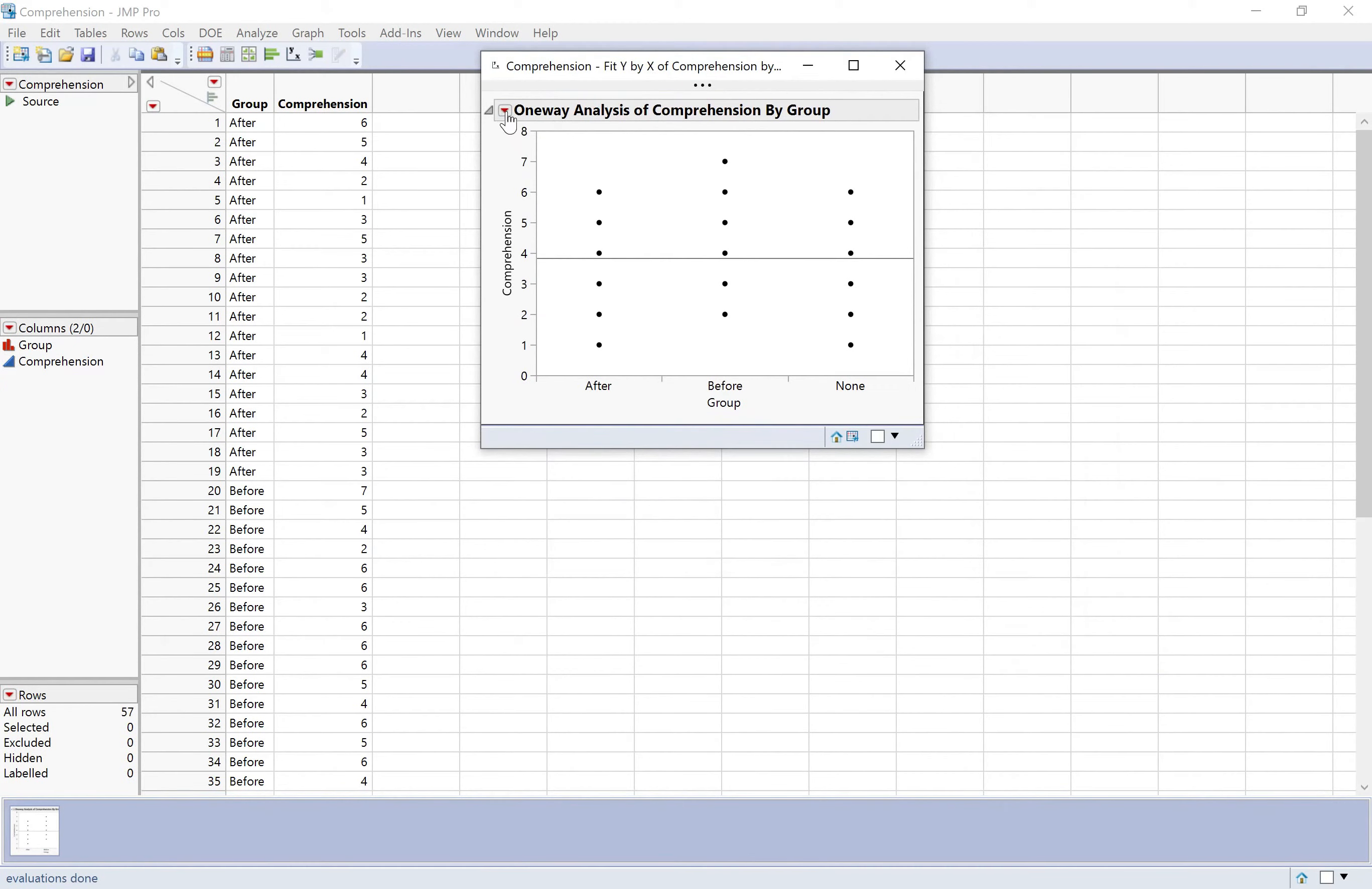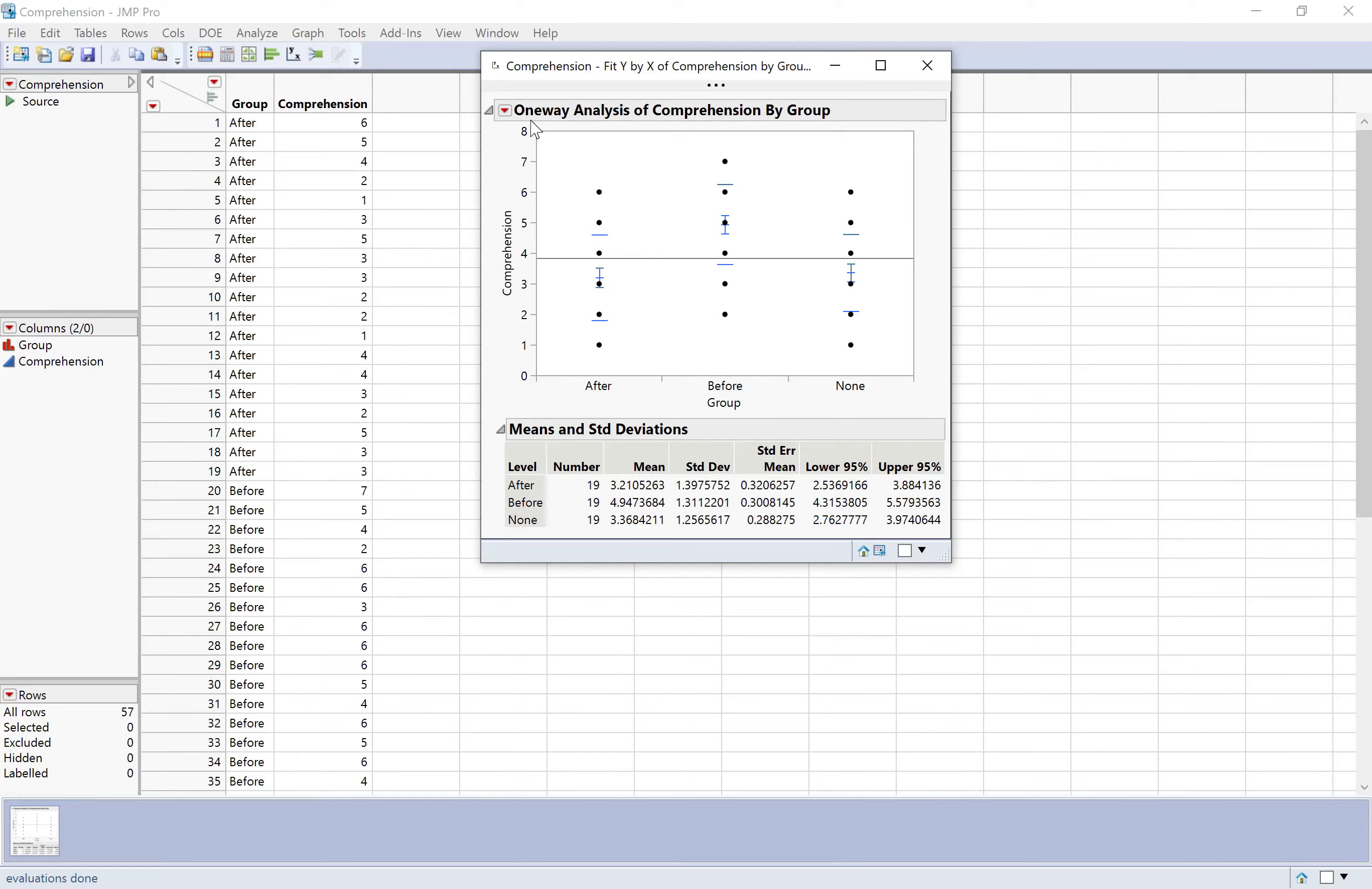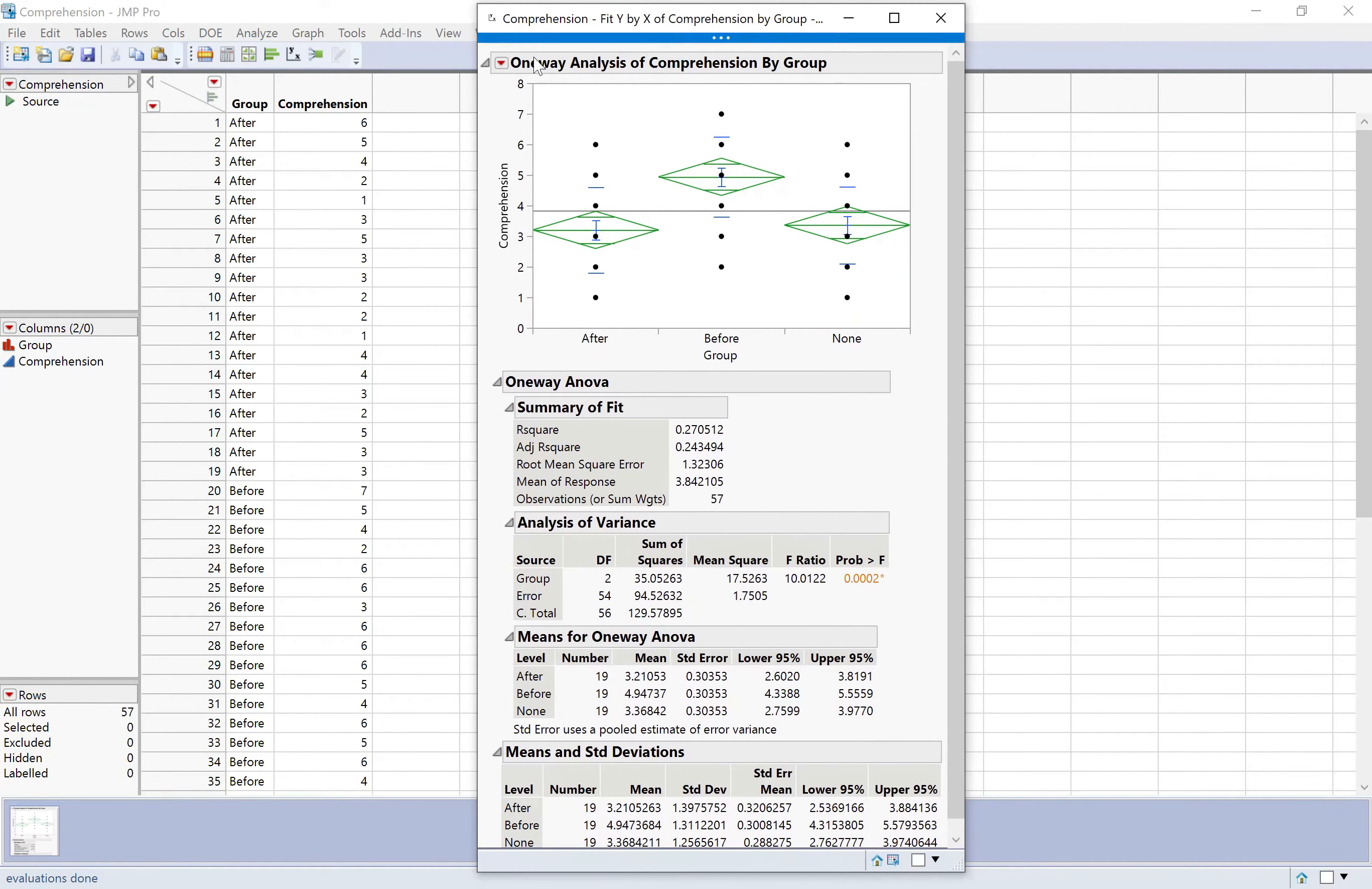So we've got several options here. For now, I'm just going to look at the means and standard deviations because that'll be relevant for the regression. We can also go ahead and show the ANOVA table. We're going to compare the ANOVA table for regression. So the ANOVA table is just showing us that there is an association between group and comprehension.